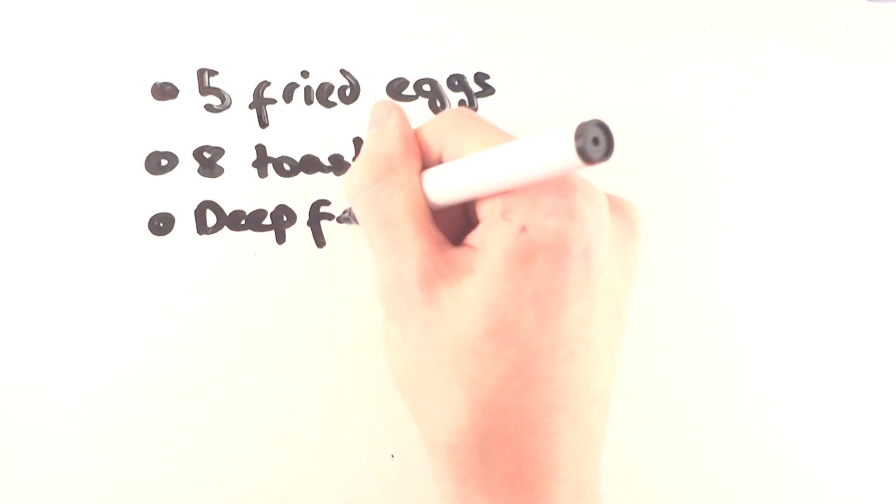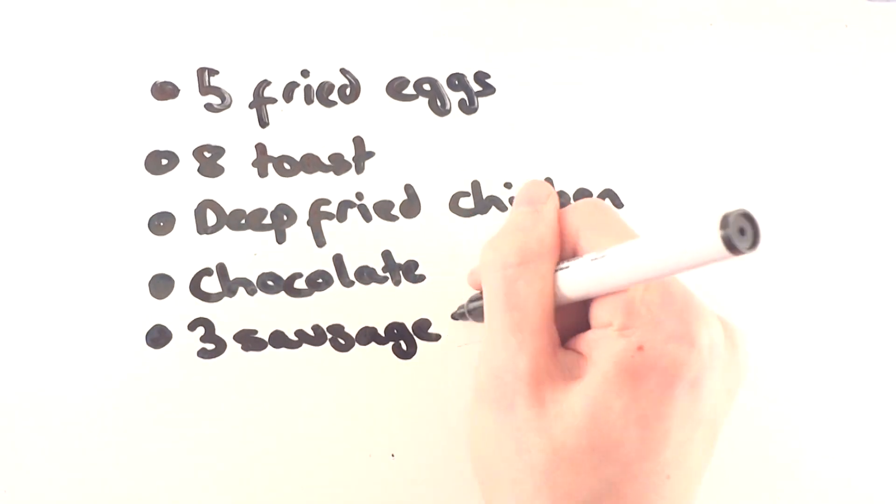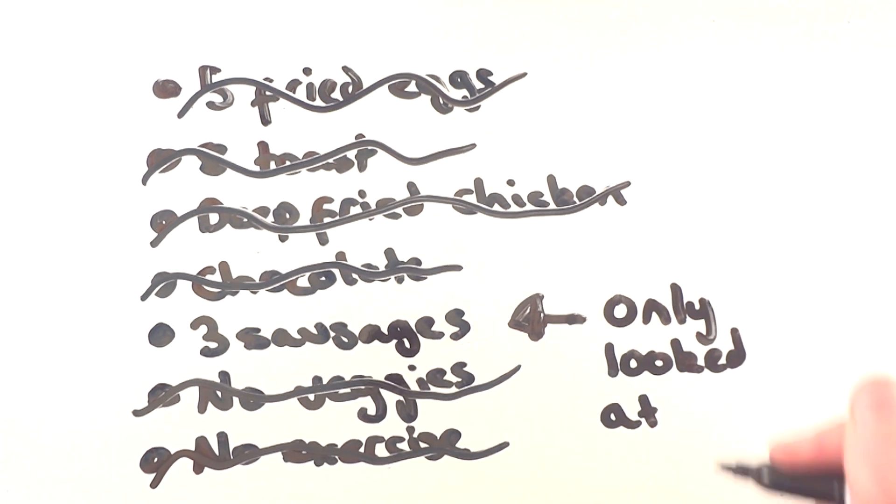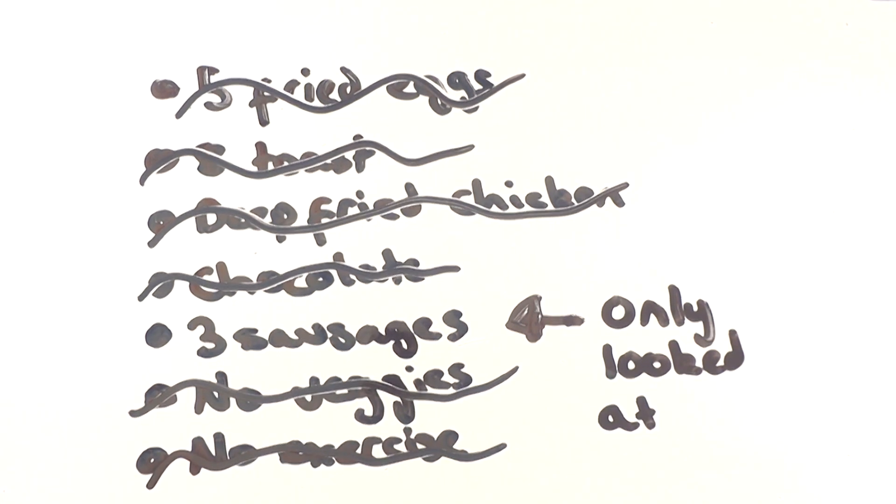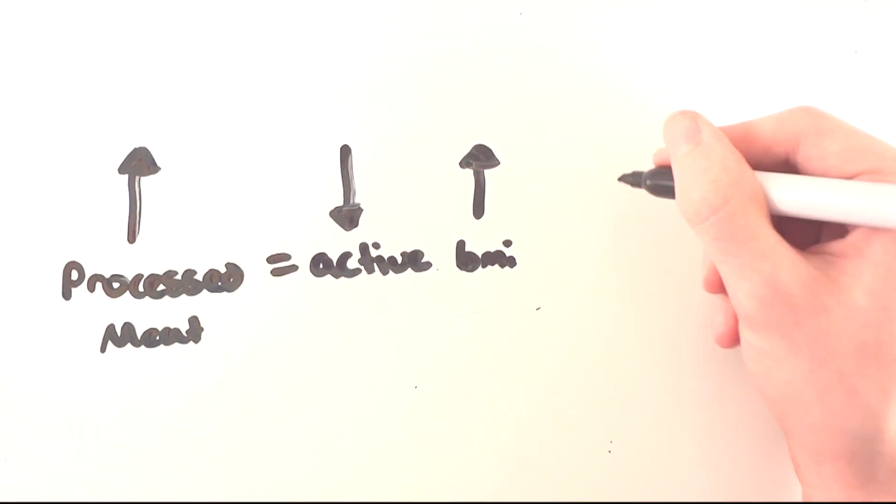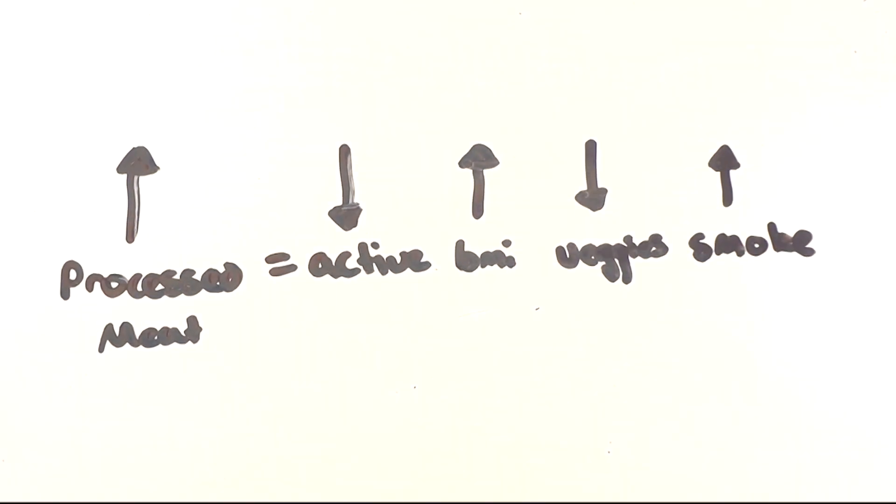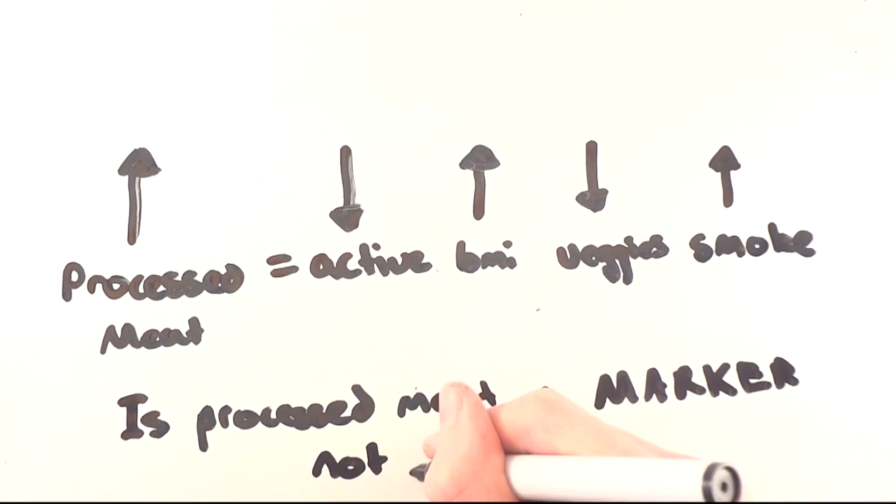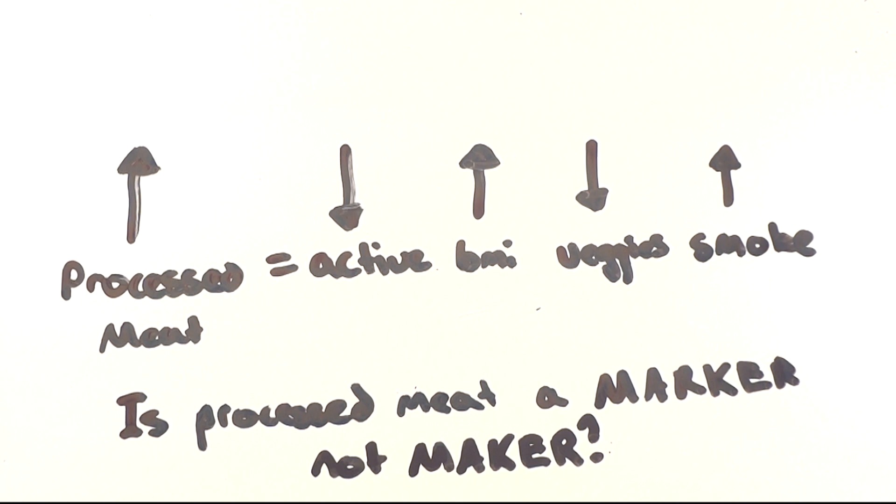There are quite a few faults with this report, such as the fact that the whole diet and lifestyle of those studied was not taken into consideration. They only looked at how much people were eating processed and red meat. For example, those who eat more processed meat are said to be far less active, have a higher BMI, tend to not eat as much nutrient rich fruit and vegetables, and be three times more likely to smoke, making processed meat potentially a marker, not a maker of an unhealthy person.